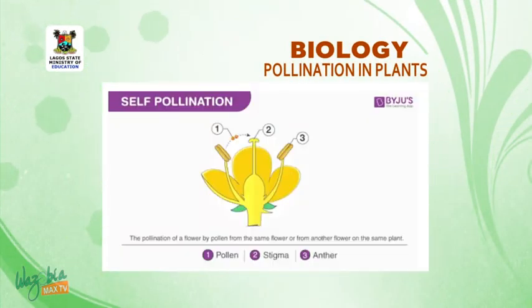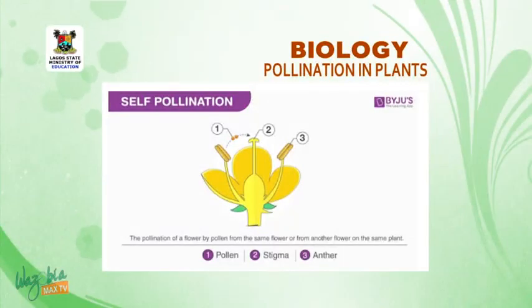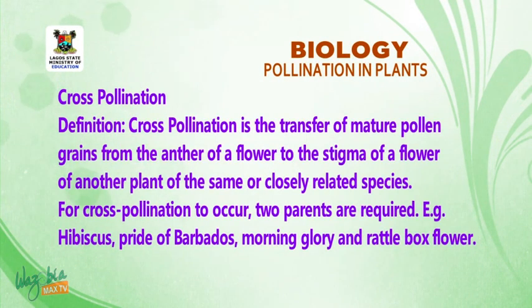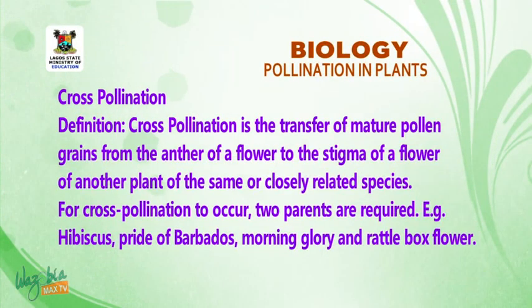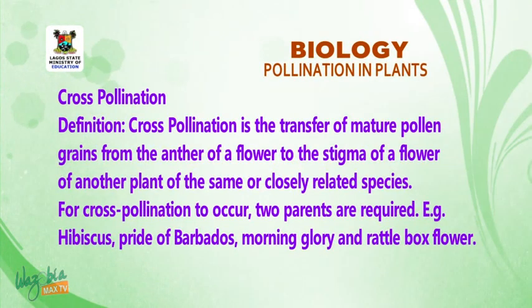Now we go to cross-pollination. Cross-pollination is the transfer of mature pollen grains from the anther of a flower to the stigma of a flower of another plant of the same or closely related species.